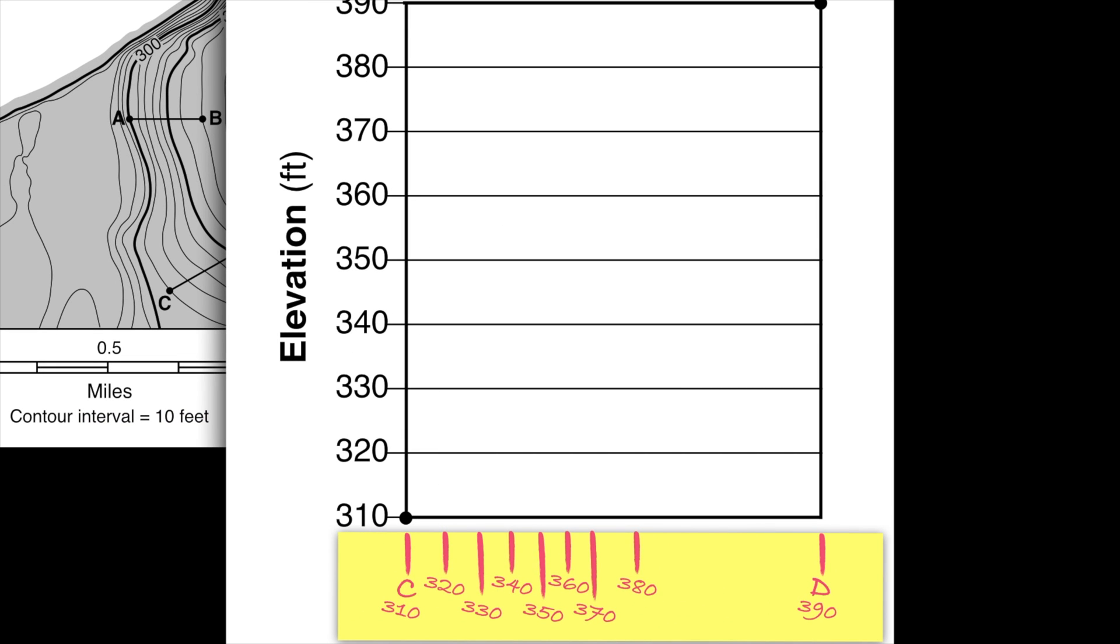Now I just need to transfer these points onto my axis here. It's just like creating a line graph. So, for example, directly above C I have an elevation of 310, so I'm going to go ahead and make a dot at 310. Above my next contour line, I'm up at 320, 330, 340, 350, 360.